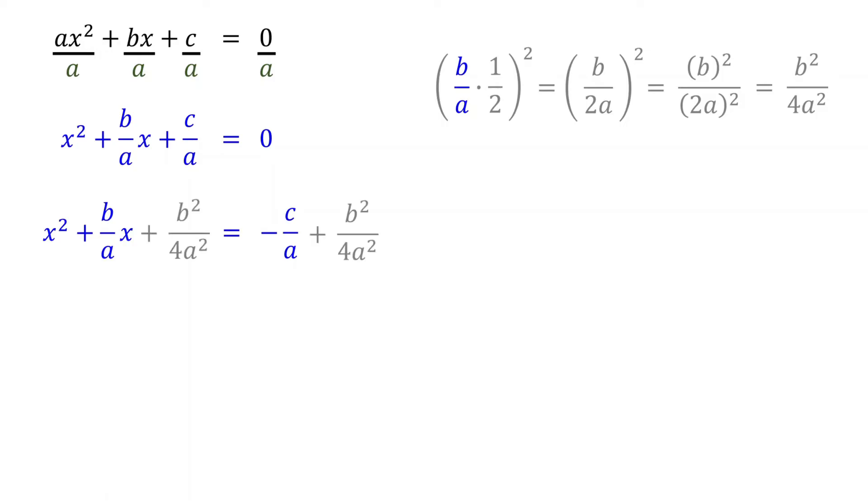Then, add this value to both sides of the equation. This addition transforms the left side of the equation into a perfect square trinomial.